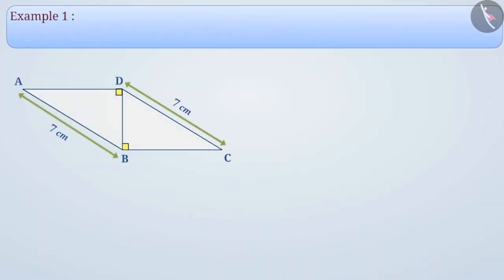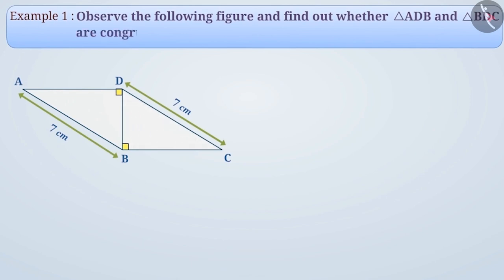Example 1: Observe the following figure and find out whether triangle ADB and triangle BDC are congruent. If it is, write their congruence relation.